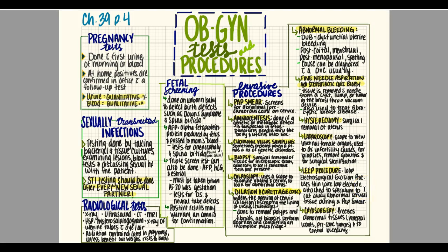Cryosurgery freezes abnormal tissues such as venereal warts or pre-cancerous tumors and is also used to control bleeding. The alternative to cryosurgery is ablation — for example, thermal ablation destroys the lining of the uterus to cease periods. Some ablations use cryoablation, radiofrequency, or other techniques rather than heat.